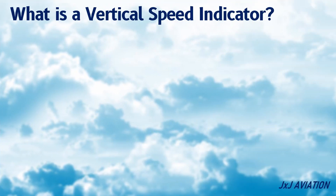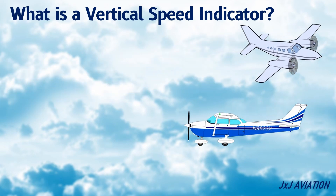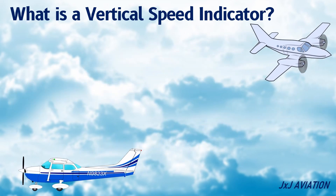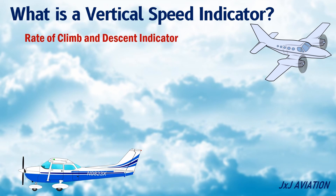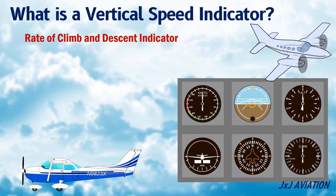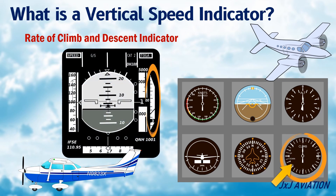A vertical speed indicator indicates the rate at which an aircraft is climbing or descending. The vertical speed indicator can also be called the rate of climb and descent indicator. This is one of the six basic instruments on an aircraft. The vertical speed information may be presented by a needle in a conventional VSI instrument, or towards the right on the primary flight display.